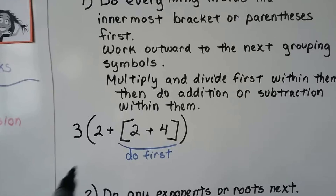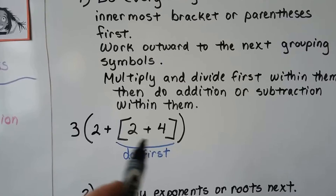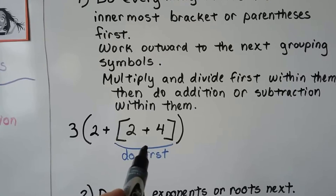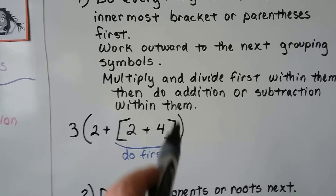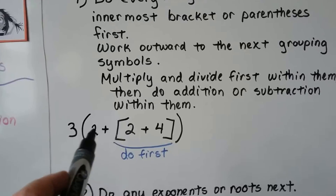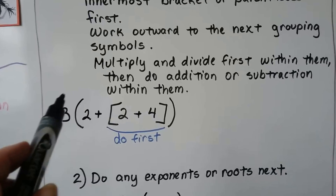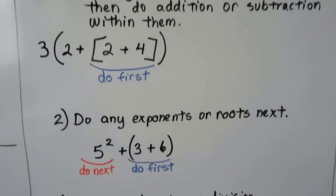So if we saw something like this — with nested parentheses — this innermost one means we would do the 2 plus 4 first. Then we would do what's inside the outer parentheses: 6 plus 2 is 8. Then we would multiply it by the 3 to get 24.